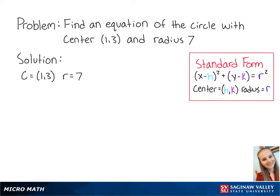The standard form of a circle shows us that the center is at (h, k). So we know that our h is equal to 1, and our k is equal to 3. We're also given our radius r, which is equal to 7.